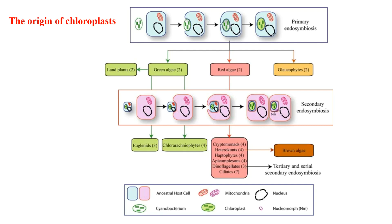Those chloroplasts showed a remarkable resemblance with free-living cyanobacteria. In this schematic presentation of primary and secondary endosymbiotic events giving rise to different green and red algal lineages, we see all the different steps. A single endosymbiotic event gives rise to three primary groups: green algae, red algae, and glaucophytes. Then the green algae ultimately gave rise to present-day land plants. The numbers 2, 3, or 4 indicate the number of membranes surrounding the plastid in those lineages.